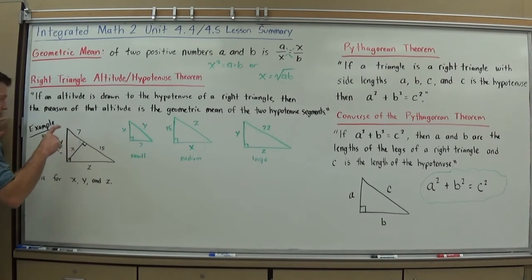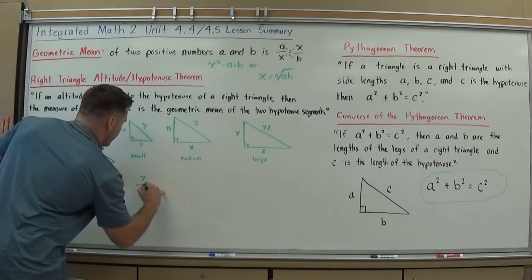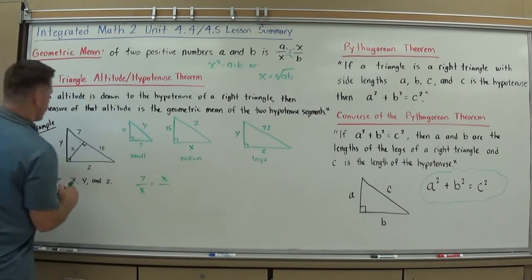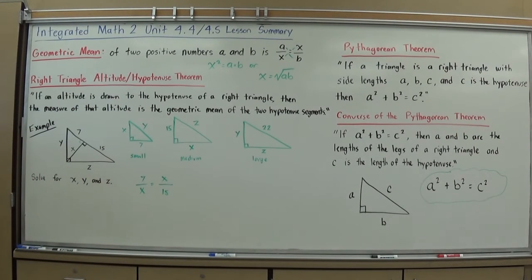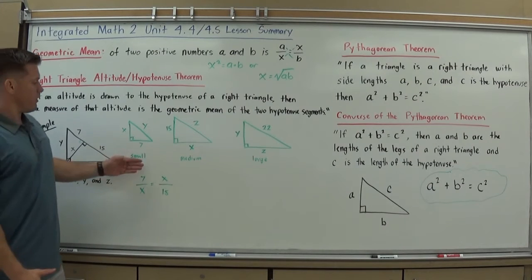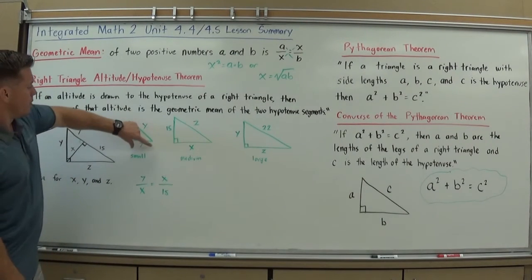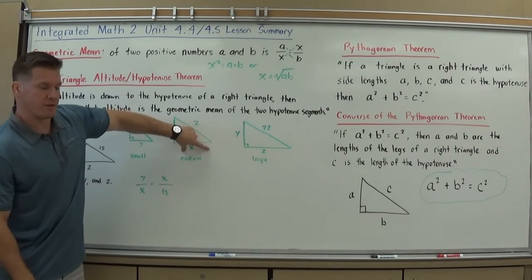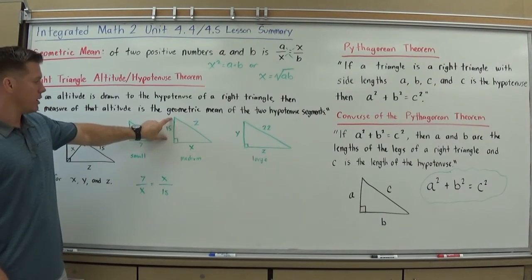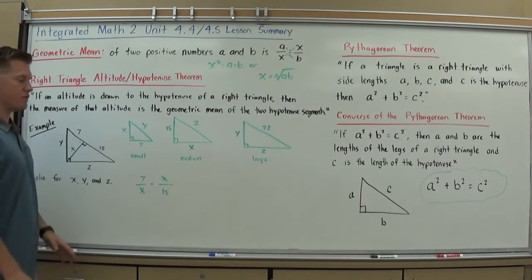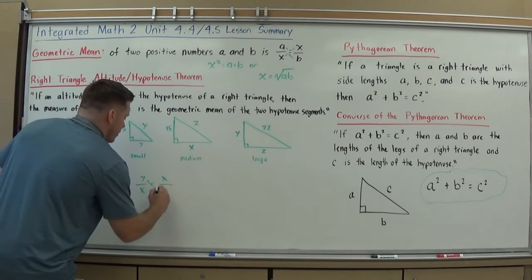Which says basically that the altitude connecting a hypotenuse in a right triangle X is equal to the geometric mean of its side lengths. So that would mean seven over the altitude X, should equal that altitude X over the other segment that helps create that hypotenuse. And that should kind of get you going. And if you look and compare the small medium triangle, you could have set up that proportion here as well. The base seven over the base of the other triangle X equals the altitude of the small triangle X over the altitude of the medium triangle 15. And so I could have set that up the same way I was setting proportions this entire chapter.